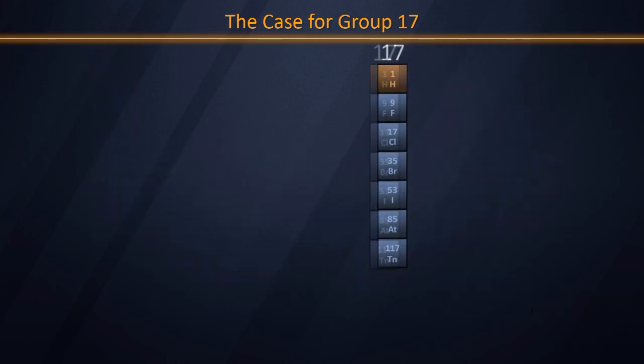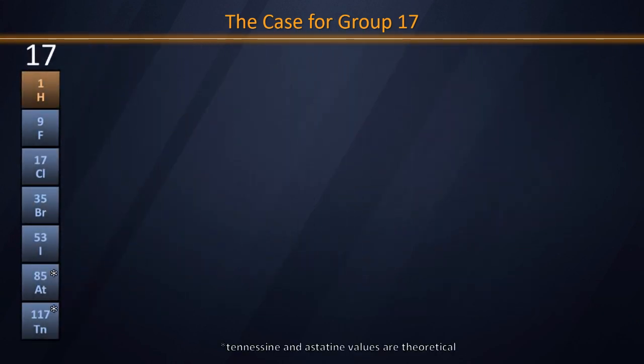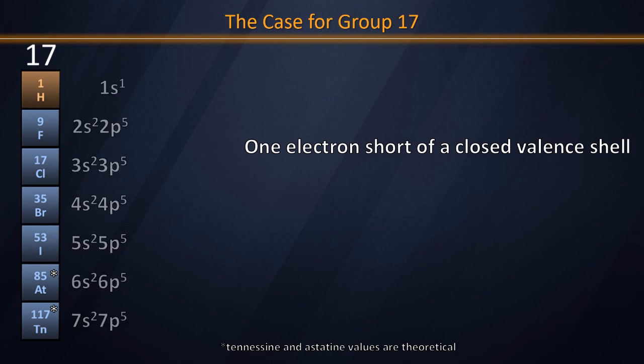But there are two more places. Let's think about the opposite side of the table, group 17, where you might want to place hydrogen. Why might we want to put hydrogen there? Because all of the group 17 elements are one electron short of a closed valence shell. Fluorine through tennessine, hypothetically, would have valence shells that are S2P5, whereas hydrogen is just an S1. However, remember that there is no P subshell in the first valence shell, and that means hydrogen is just one electron shy.